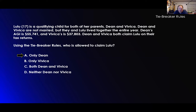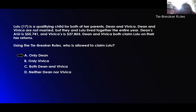Lulu, 17, is a qualifying child for both of her parents, Dean and Vivica. They are not married, but they and Lulu live together the entire year. Dean's AGI is $55,000 and Vivica's is $37,000. Dean and Vivica both claim Lulu on their tax returns. Using the tiebreaker rule: they're both parents, they lived together the entire year — same amount of time — so now it goes to the AGI. Dean's is higher than Vivica's, so only Dean can claim Lulu.